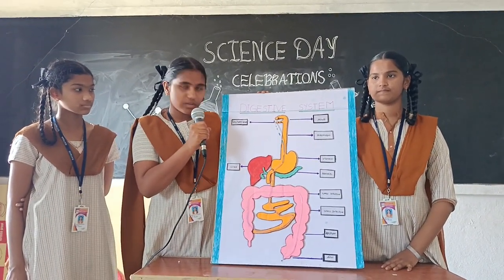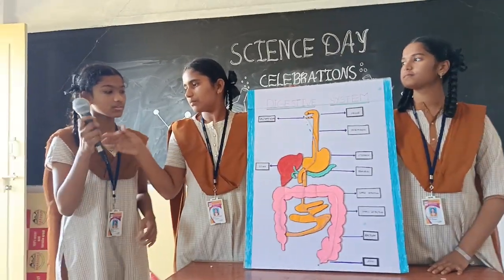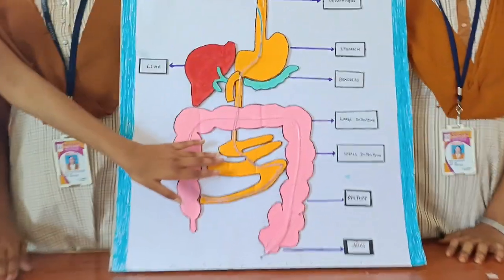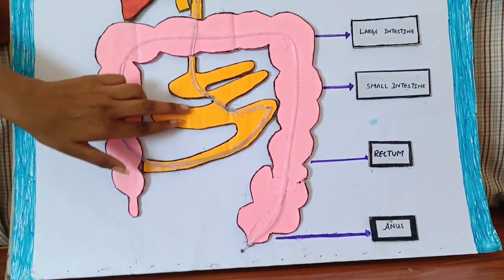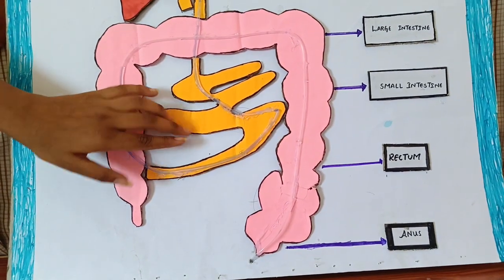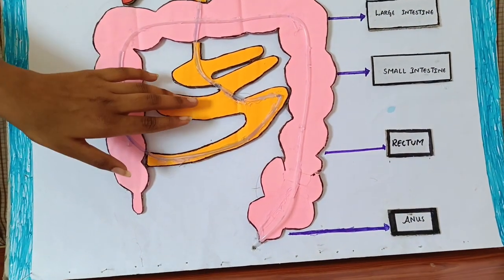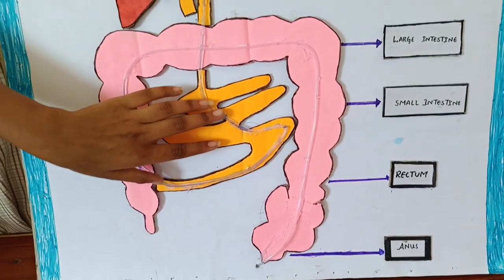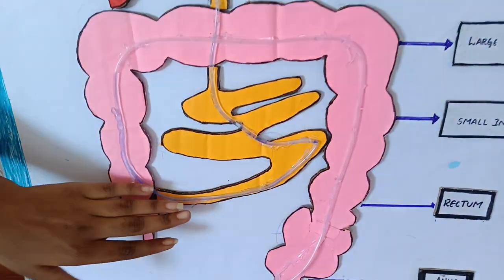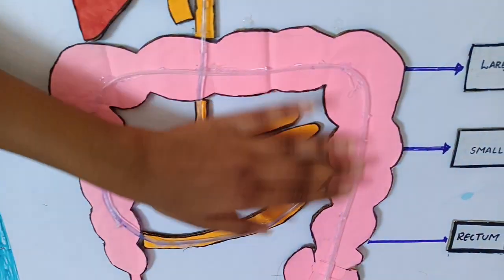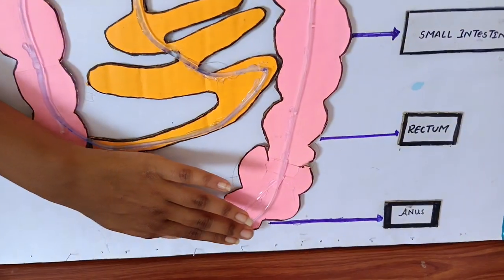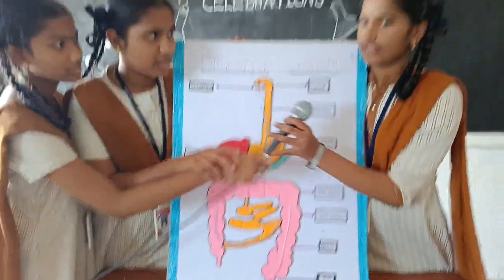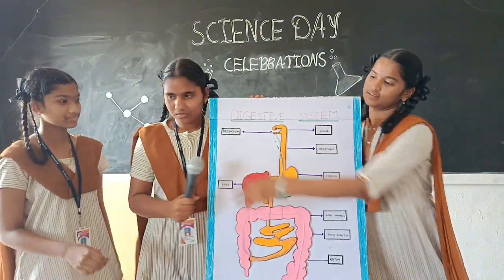Now the food enters into the small intestine. The small intestine is the longest part of the alimentary canal. The walls of the small intestine secrete intestinal juice. The carbohydrates, proteins and fats are further digested. The small intestine absorbs proteins, glucose, and other needed energy materials. Then the food materials and waste materials travel through the large intestine and are released through the anus. Thank you.